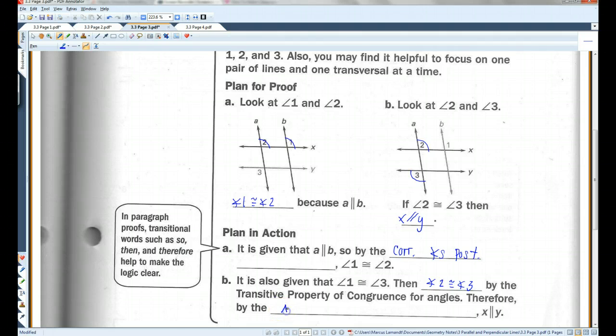Therefore, by the alternate exterior angles converse, X is parallel to Y.